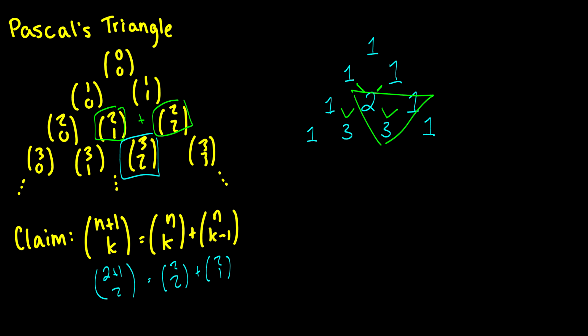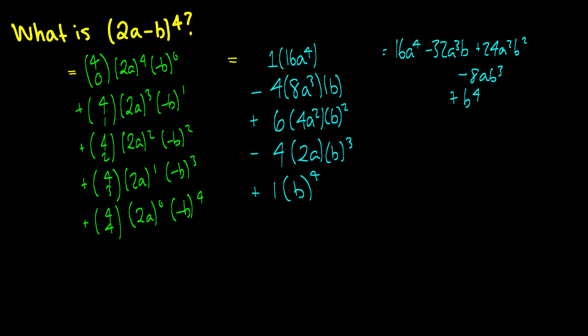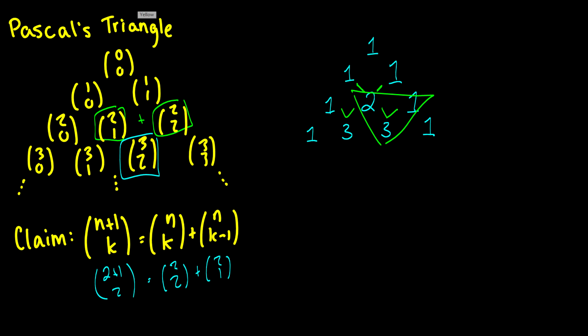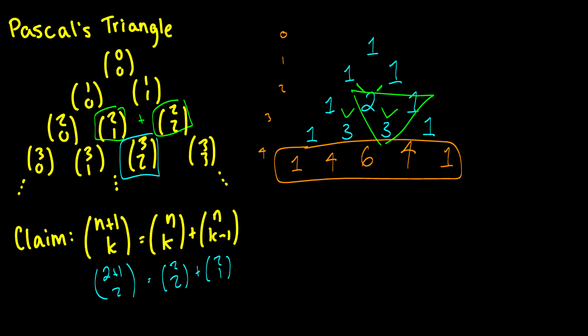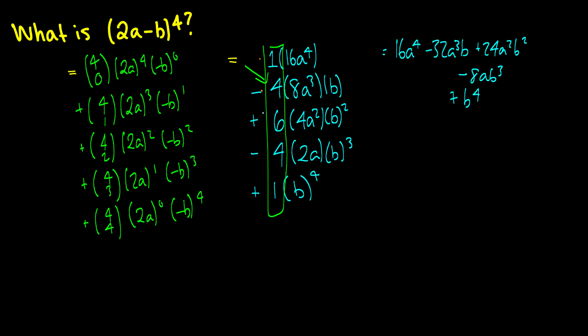Going back to the previous problem, once I found the 4, it didn't take long to figure out the next value, because I was able to figure out the numbers for that row of the triangle. The outer values are always 1, then 1+3 is 4, 3+3 is 6, and 3+1 is 4. So for x plus y to the 0, 1, 2, 3, 4 — when we deal with something to the 4th power, the coefficients are 1, 4, 6, 4, 1, which are exactly those values.